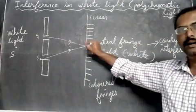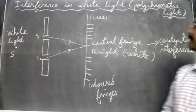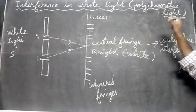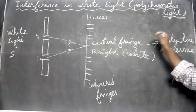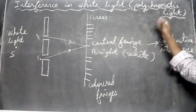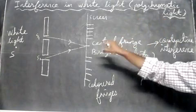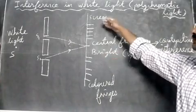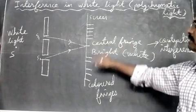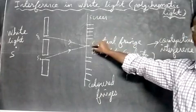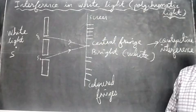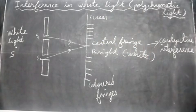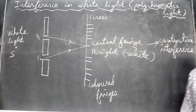The central fringe is bright white because of constructive interference. This explains interference in white light — when polychromatic light is used in Young's double slit experiment, we get different colored bands on the sides, but the central fringe is always white in color. Thank you for watching.